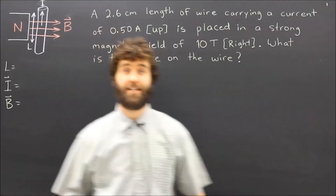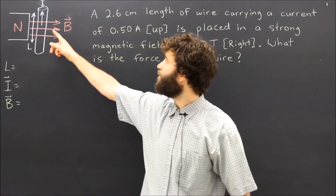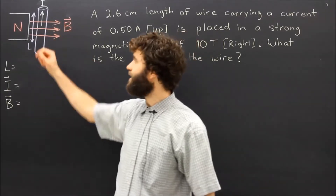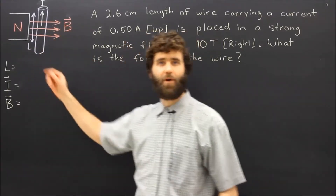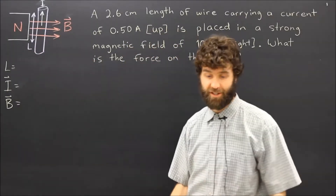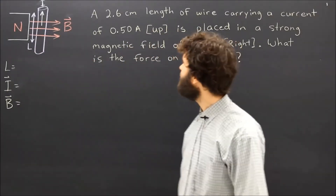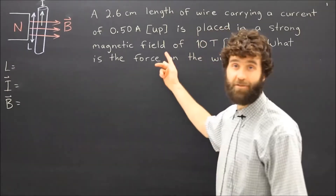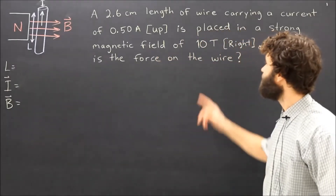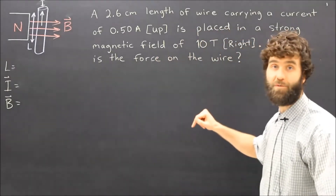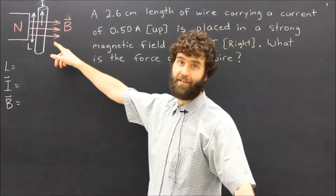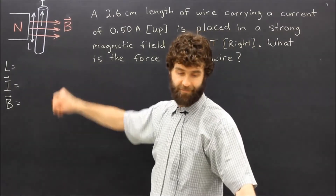As you know, when electricity flows through a wire near a magnet, the wire experiences a force and gets pushed. Today we're going to do a calculation to determine what the strength of that force would be on this wire in this field.